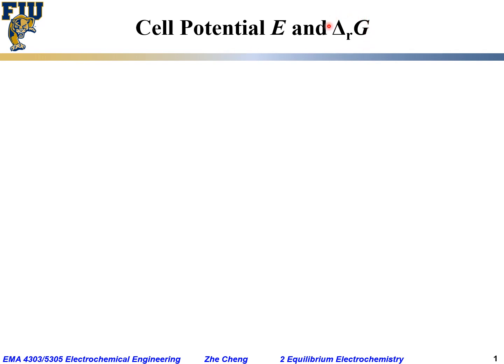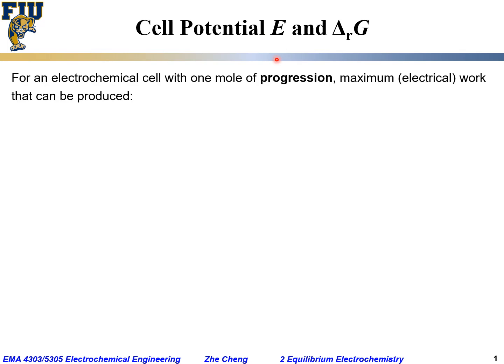We just talked about delta G, the reaction Gibbs free energy change. Now, in electrochemical chemistry, we have to link delta G to cell potential E. For an electrochemical cell, with one mole of progression — which does not necessarily mean one mole of products formed or one mole of reactant consumed — we consider the maximum electrical work that can be produced.